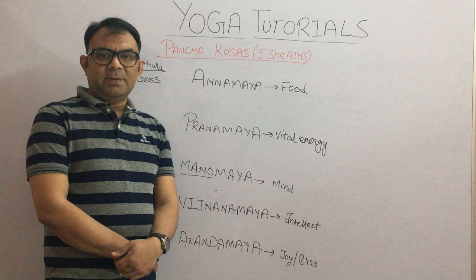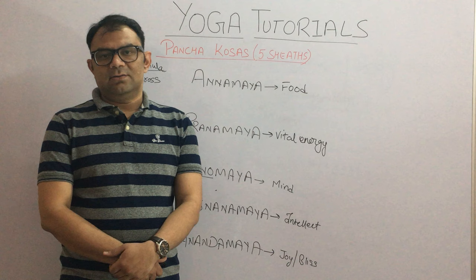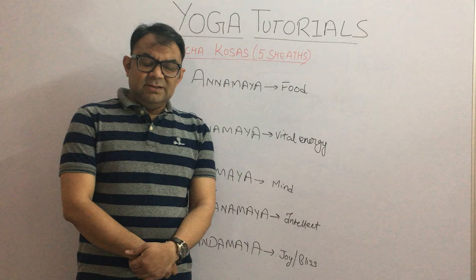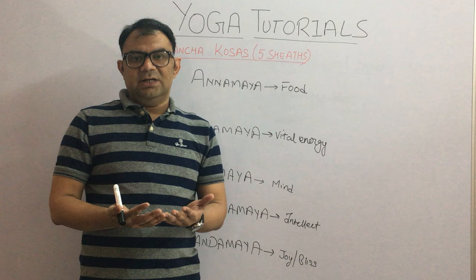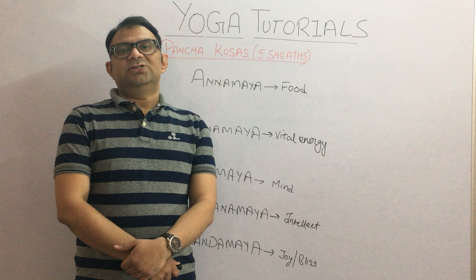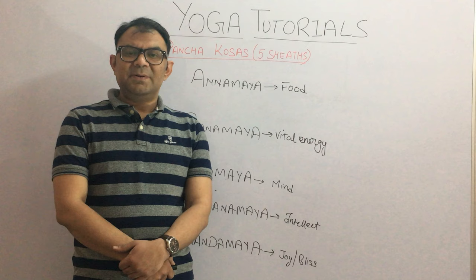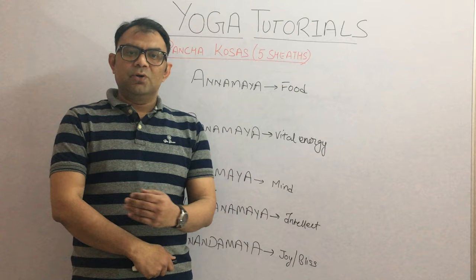In the Taitariya Upanishad, there is a conversation going on between a father and a son. The father is Varuna and the son is Bhrigu. Bhrigu asked the question to his father: oh father, what exactly is this whole universe made up of? Then the father replied, go and search about it. He told him to do some tapas, and tapas is basically inner research.